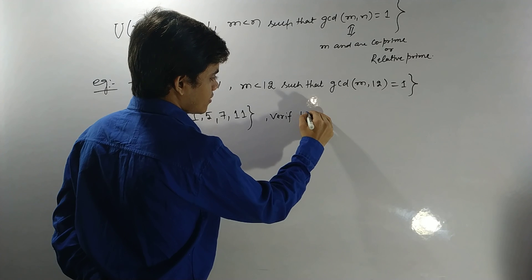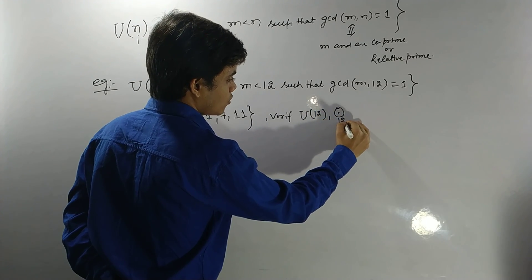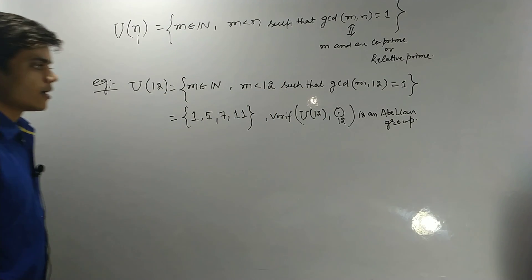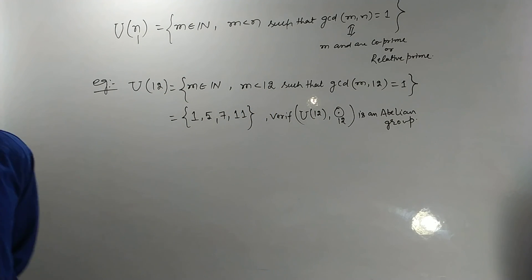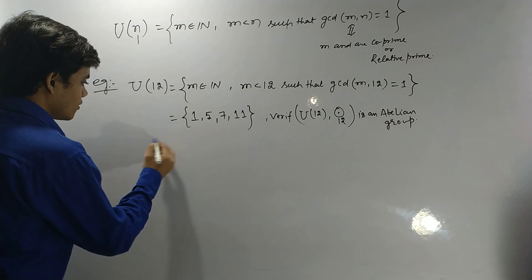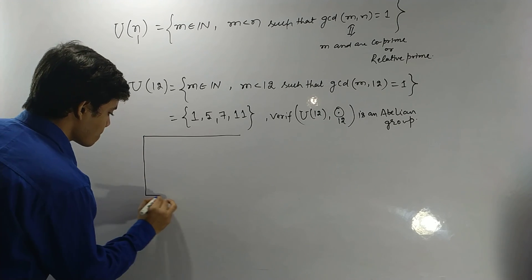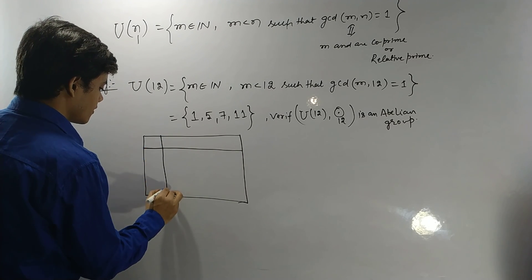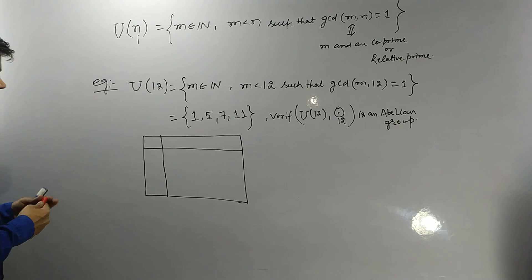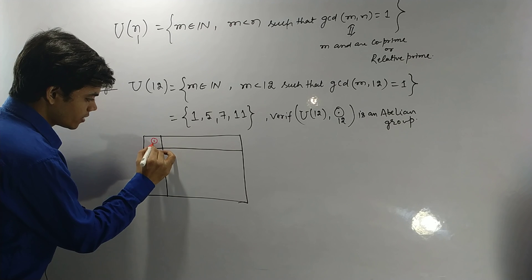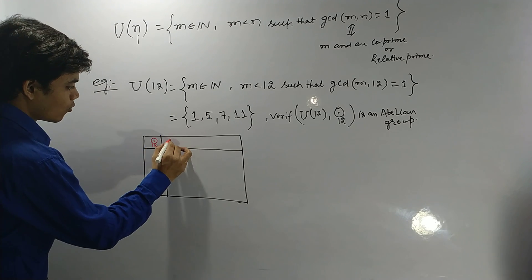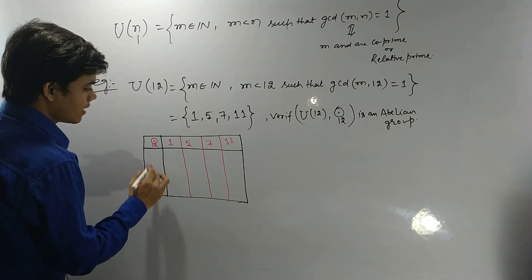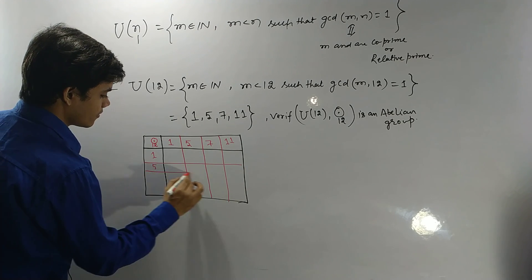We have to verify that U(12) with multiplication modulo 12 is an abelian group. First of all we will make a Cayley table. We write the binary operation — multiplication modulo 12 — along the rows and columns with elements 1, 5, 7, and 11.